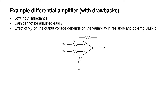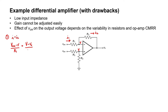Let's start by finding the common mode gain of this amplifier. I've drawn VCM, the common mode signal, attached to both input pins. If the amplifier is working as desired, the output voltage ought to be zero. I'm going to call this voltage V, and if the op amp is giving us a stable output, then the voltage at the inverting pin should also be V. Let's label current I1 and current I2. Assuming an ideal op amp, no current branches into the inverting pin, so I1 should equal I2. I1 is found by applying Ohm's law across R1, and I2 across R2.